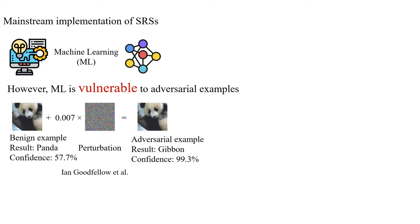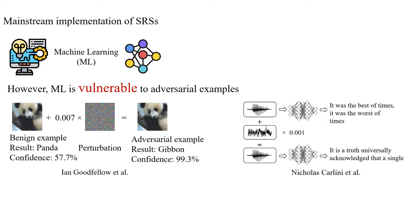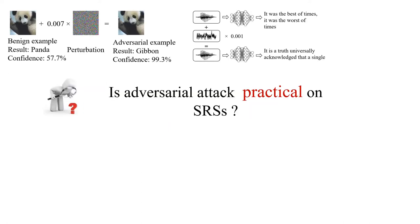I think most of you are quite familiar with this picture. The benign example contains a panda, and the machine learning model correctly recognizes it as a panda. The attacker adds perturbation to the benign example to compute an adversarial example. Although the adversarial example still looks like a panda to human users, the machine learning model recognizes it as a gibbon with very high confidence. The picture on the right is an example of adversarial attack in the speech-to-text domain. So here, there is a natural question: is adversarial attack practical on speaker recognition systems?